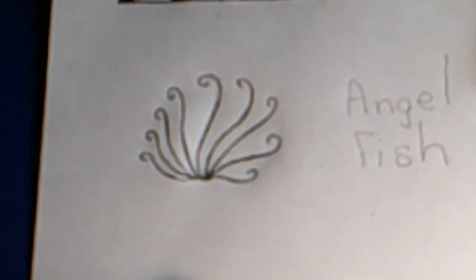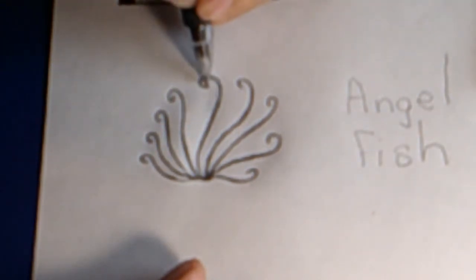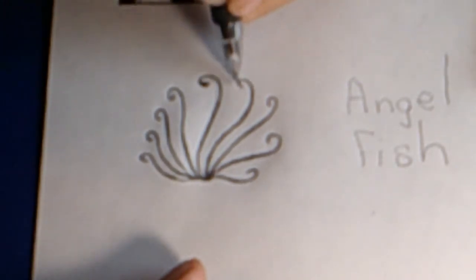Okay, now at the top of each of our little s-shaped lines where we have a little curlicue, let's close that in with kind of a teardrop shape and we'll color each one of those in.